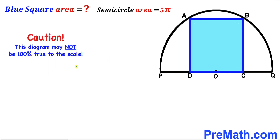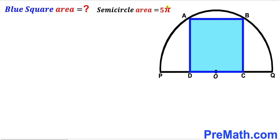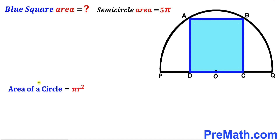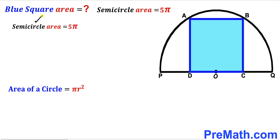Please keep in mind that this figure may not be 100% true to scale. We have been given the area of this semicircle as 5 times pi, so our task is to calculate the radius of this semicircle. I'm going to label this radius as lowercase r. Let's recall the area of a circle formula: area is always equal to pi times r squared. The semicircle area is going to be pi times r squared divided by 2.